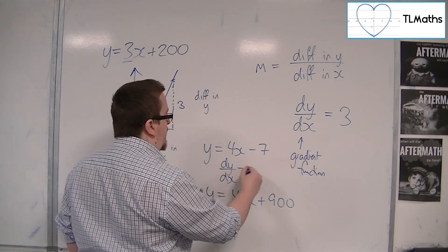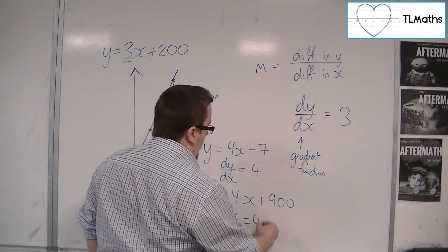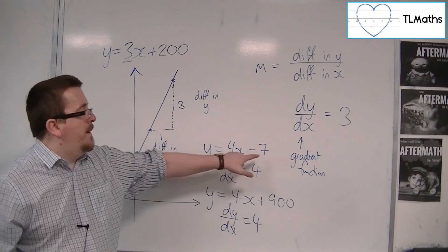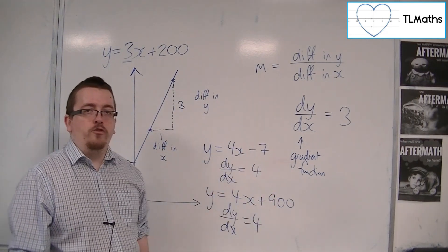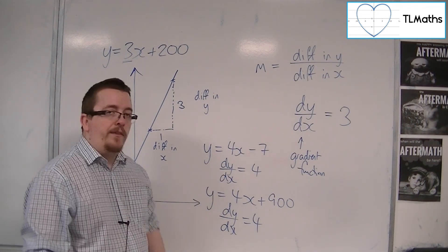I could write dy by dx is 4 because the gradient is unchanged. It doesn't matter about that minus 7 or 900. It doesn't matter what number I've added on or subtracted. The gradient is exactly the same.